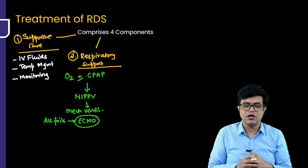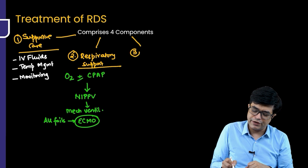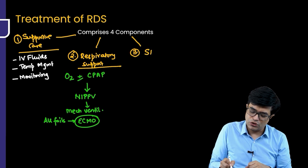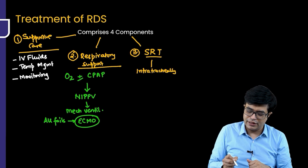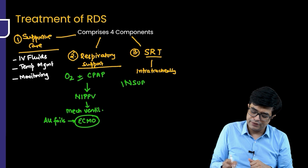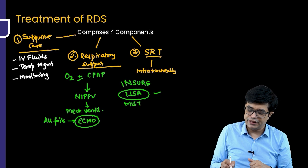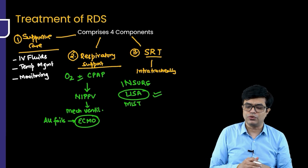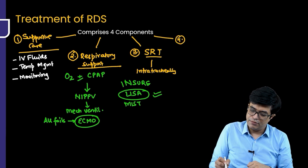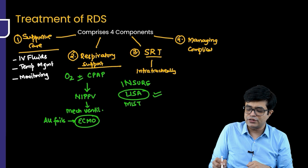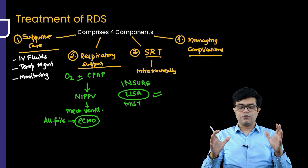The third component is surfactant replacement therapy (SRT), since surfactant deficiency is the root cause. Surfactant is given intratracheally, directly into the trachea. The gold standard technique is the INSURE technique. Newer techniques include LISA and MIST, with LISA being increasingly followed as it does not require intubation — only a catheter is needed. The fourth component is managing complications, which is needed in patients who present late or are already in advanced respiratory failure or shock.